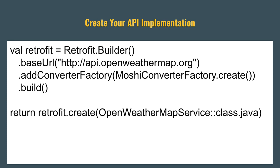Once we have our OpenWeatherMap service interface defined, we can use that Retrofit Builder class to create a Retrofit object and then use that to create the generated instance of our API class. It's in this builder process where we also have an opportunity to customize how our requests will be made. In this case, I've specified a base URL of api.openweathermap.org. I've then added a converter factory — this is a converter factory from a library called Moshi, which does JSON serialization and works particularly well with Kotlin. This will allow us to take the JSON response from the API and map it into those model classes.